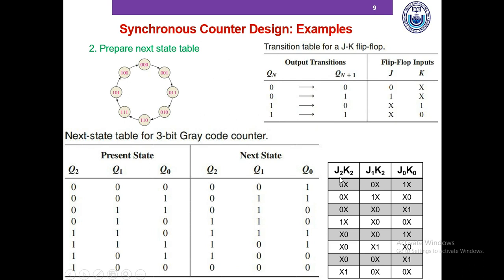To fill out the J and K values in the next state table: if we're trying to determine the J2 and K2 values in the first row, we ask what values of J2 and K2 can cause the 0 to 0 transition of Q2 as it goes from present state to next state. We look into the transition table and see that J2=0 and K2=X leads to a 0 to 0 transition, so we set J2=0 and K2=X in the first row. In this manner we complete the remaining columns of the next state table.